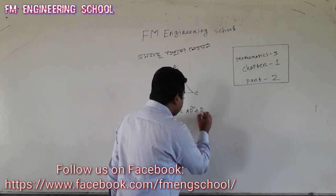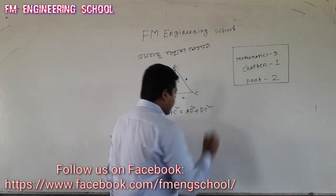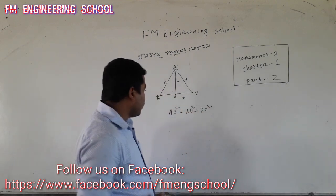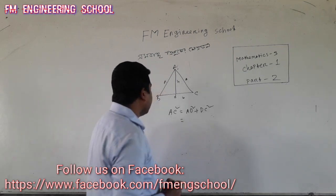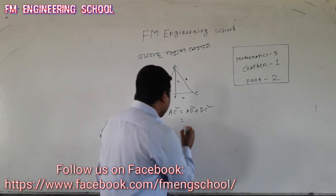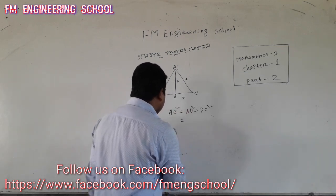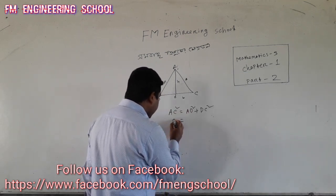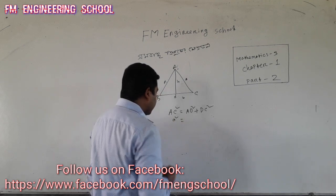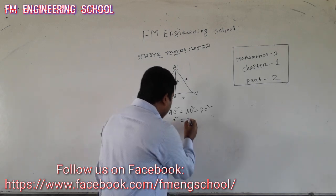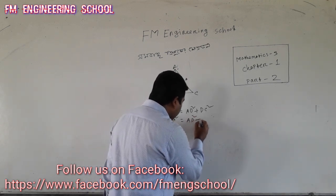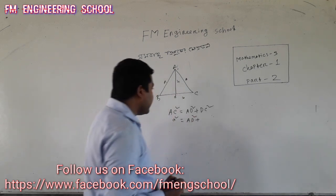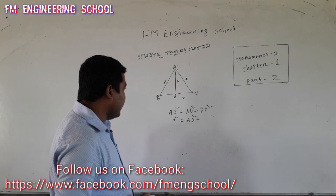We saw this triangle in the middle. We have ADS square, we have ADS square, AC square, ADS square, and DC square.